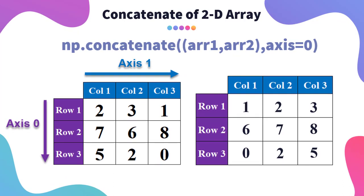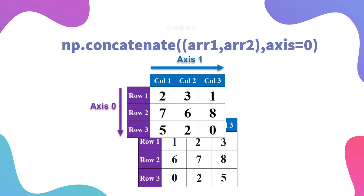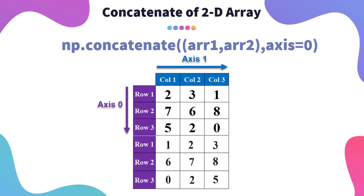First of all, we will learn about concatenation of 2D arrays. When you want to concatenate a 2D array, you write np.concatenate, then the first array name, second array name, and then the axis. By default, the axis is 0 for concatenation. So when we write this, it will concatenate these two arrays on axis 0. This will be the resultant array.